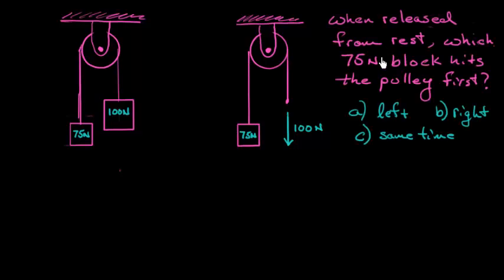So the question is this. When released from rest we're going to release both of them from rest at the same time and I want to know which one of these 75 newton blocks hits that pulley first. Is it the one on the left? Is it the one on the right? Or do they hit at the same time?